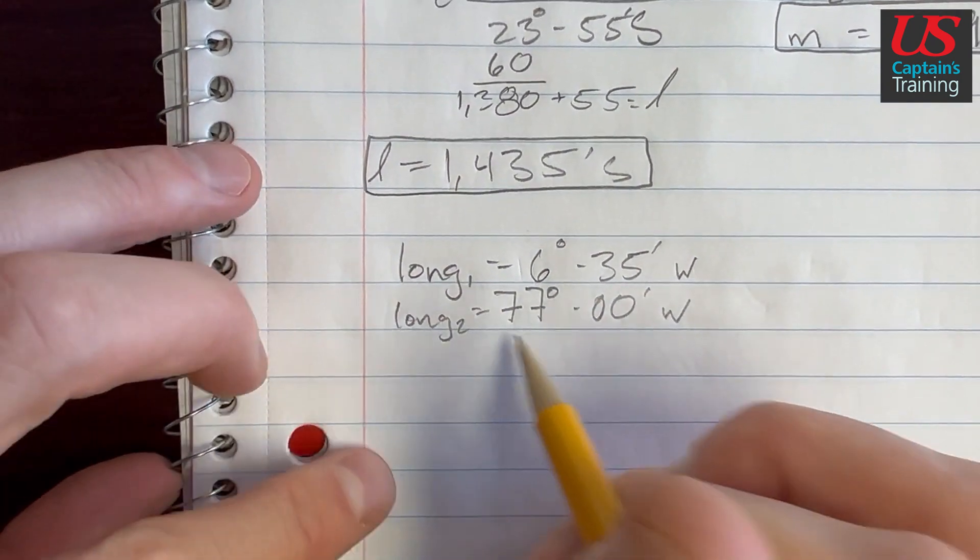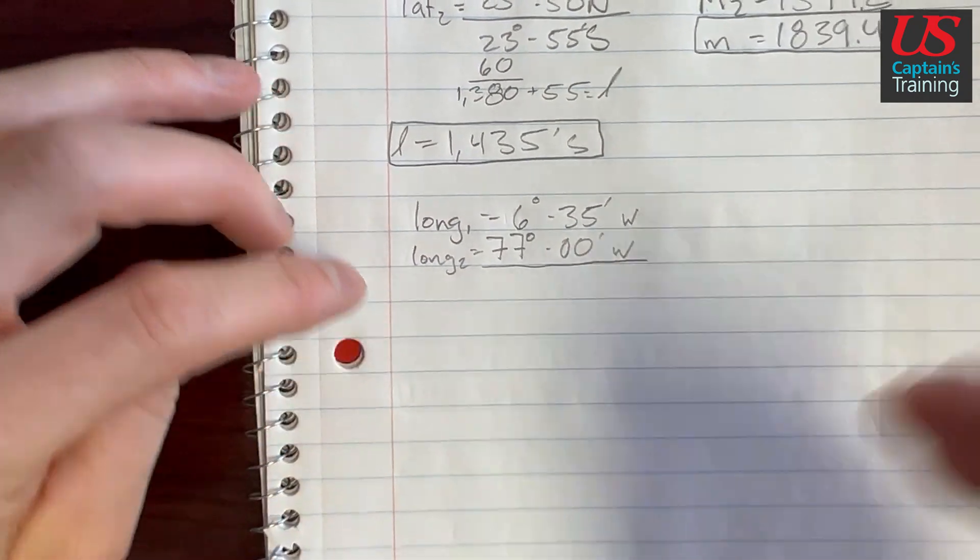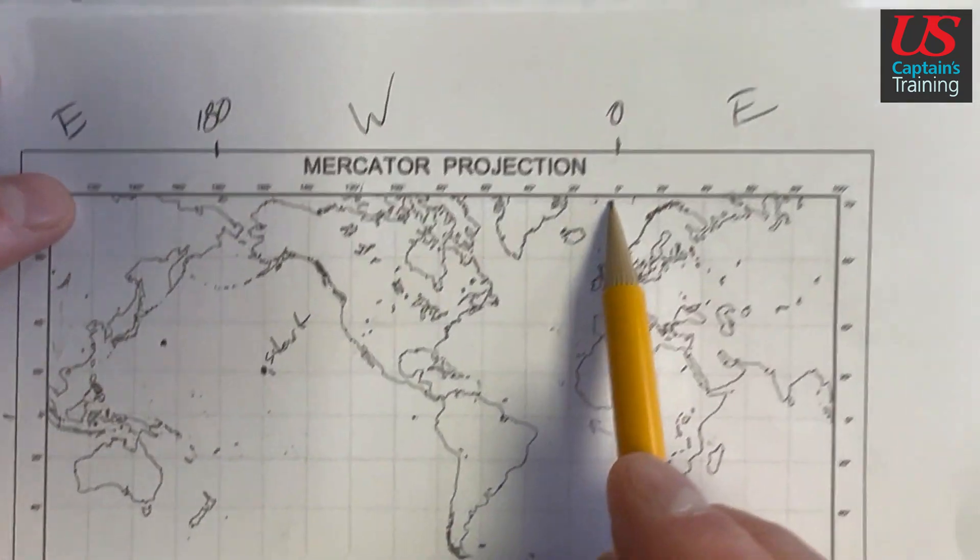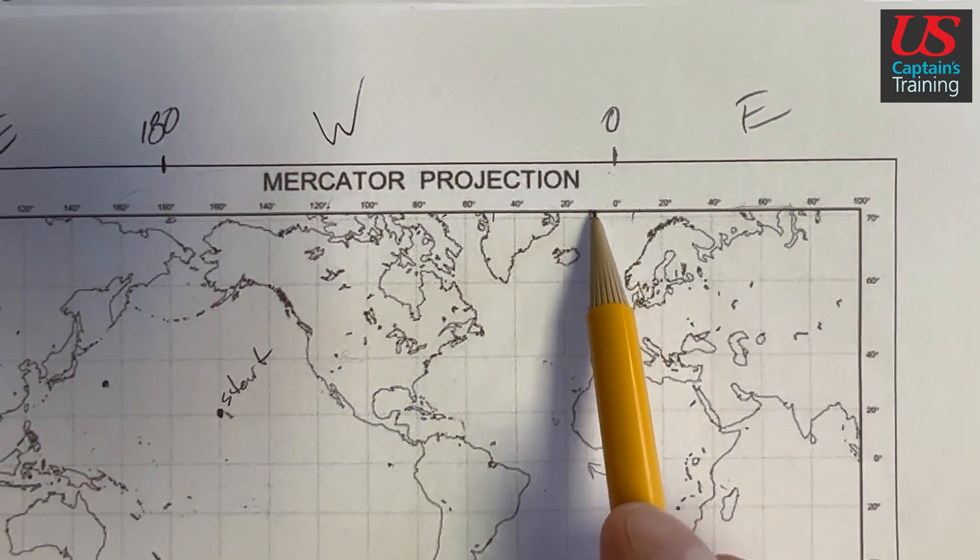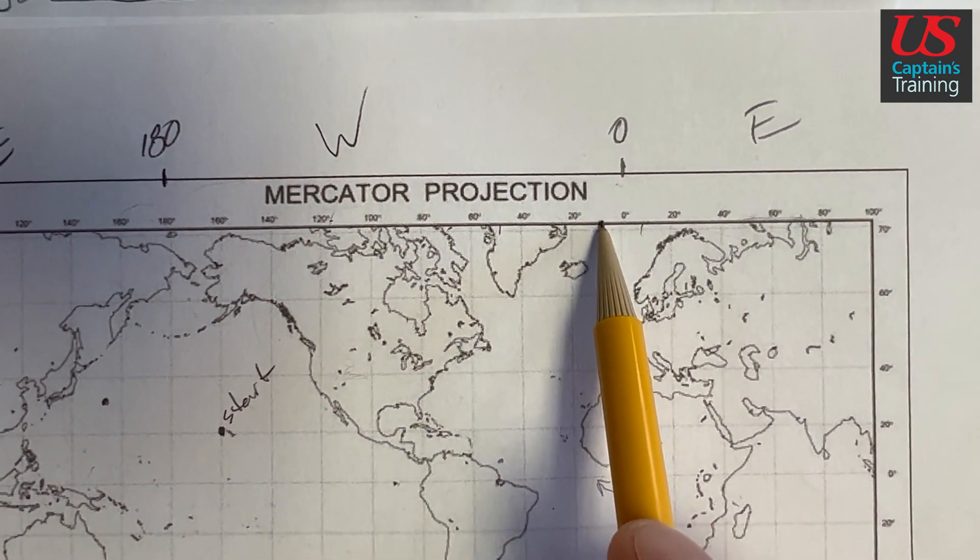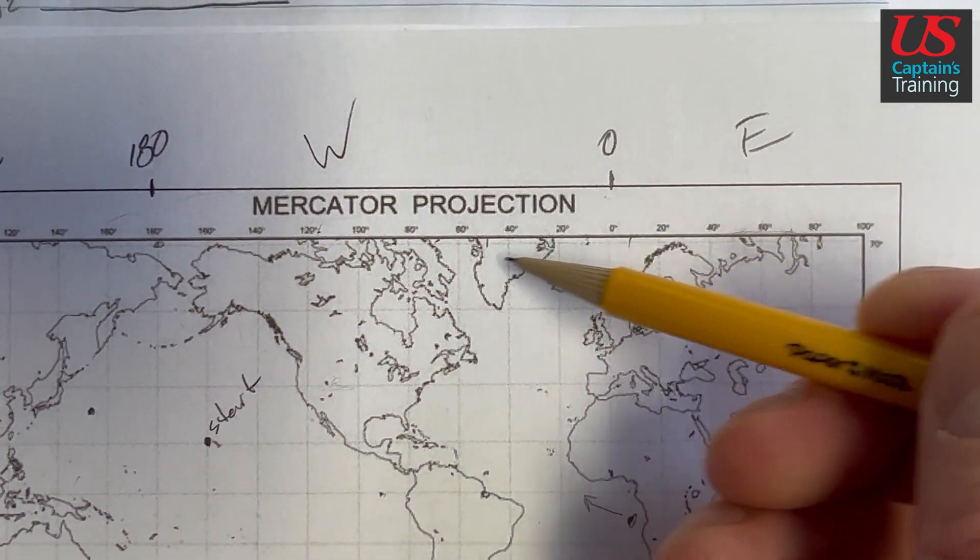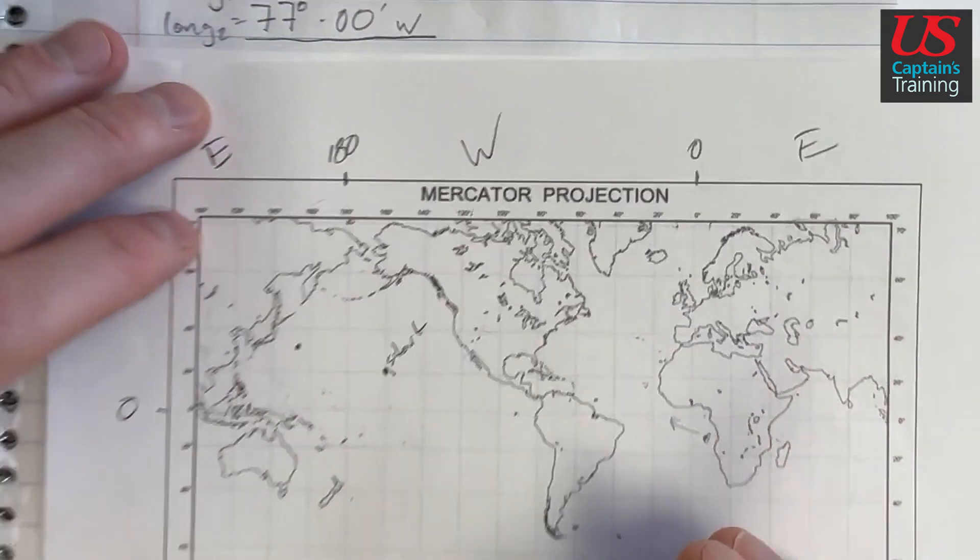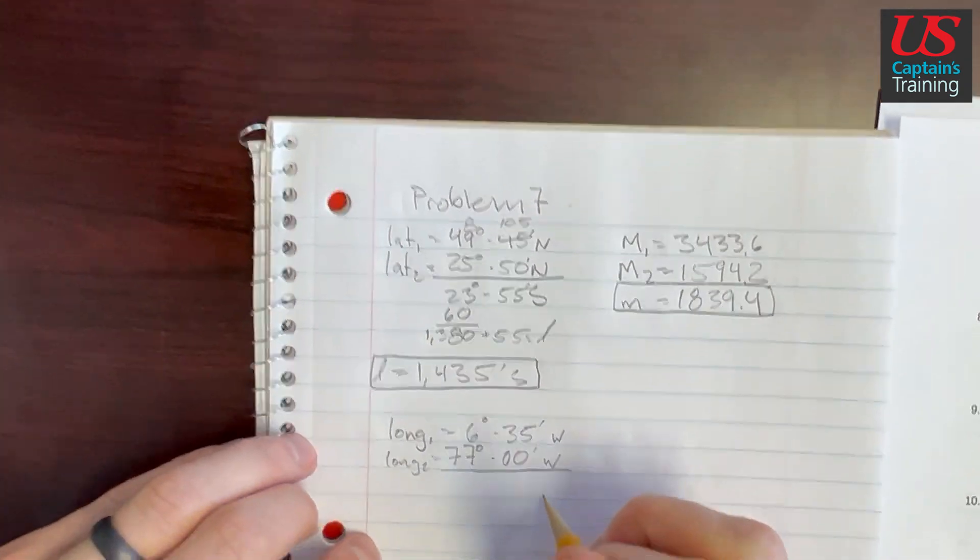So let's figure out which way we were going. We went from 6 west, which is over here. Here's zero, here's the prime meridian. Here's right around 6 west, and we went all the way over to 77. So we went west.